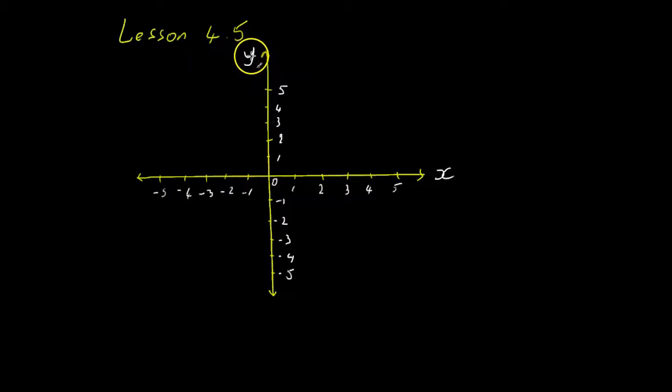So on a graph we typically see an x-axis which is horizontal and a y-axis which is vertical. We always look at our starting point here, the zero, which is at the center of this cross and whenever we go upwards,